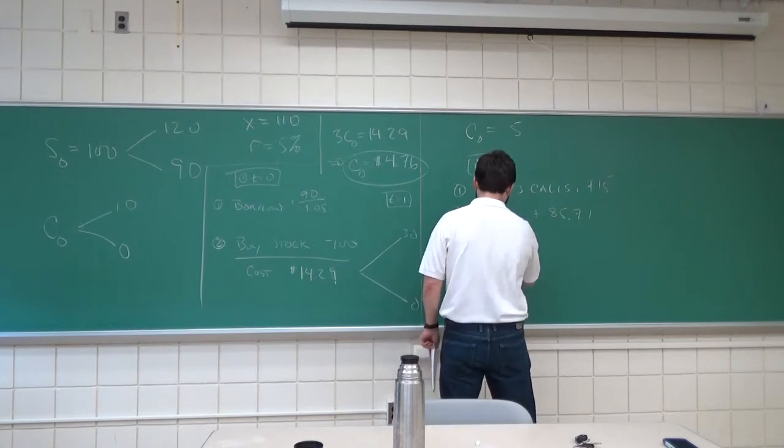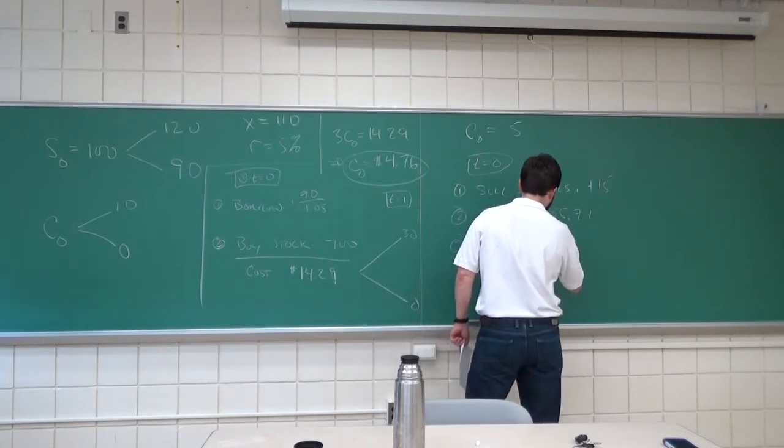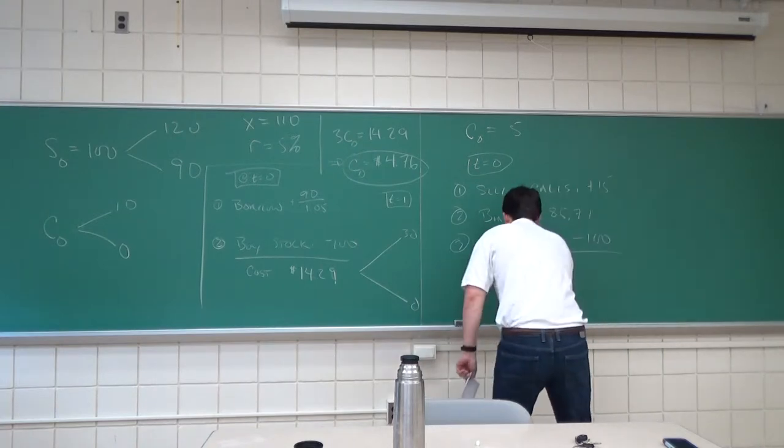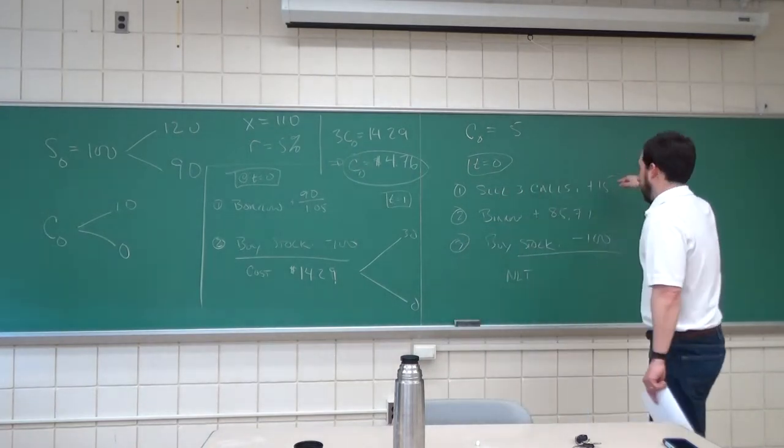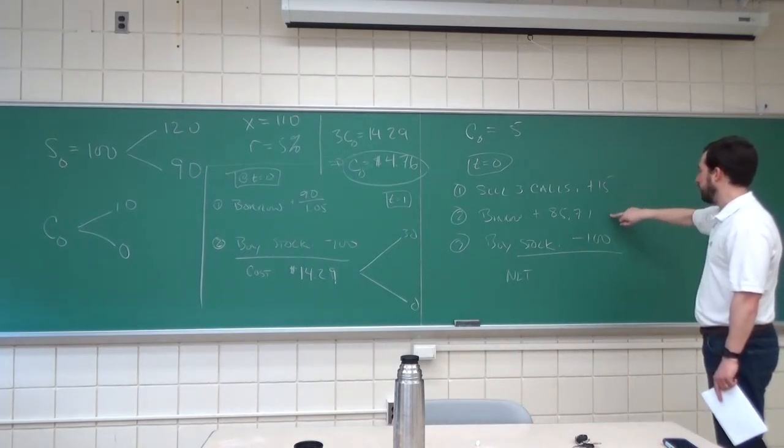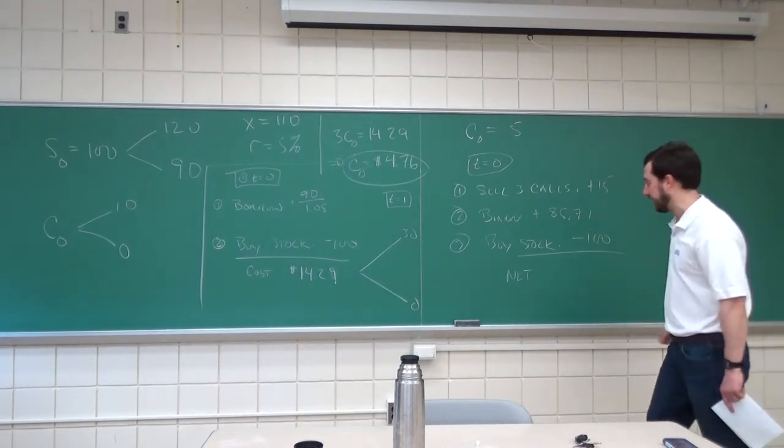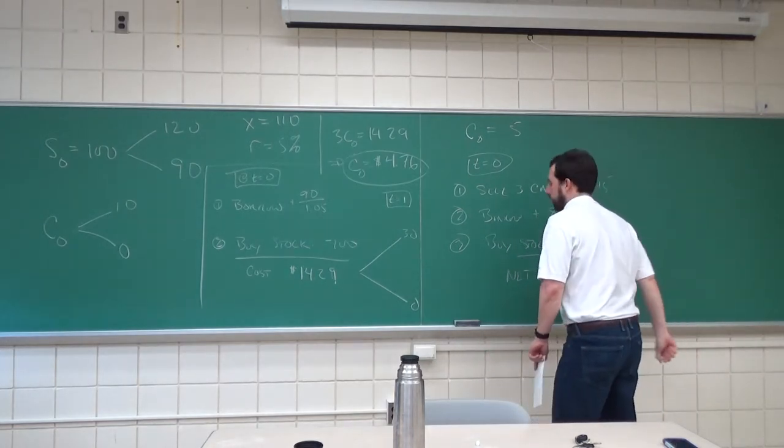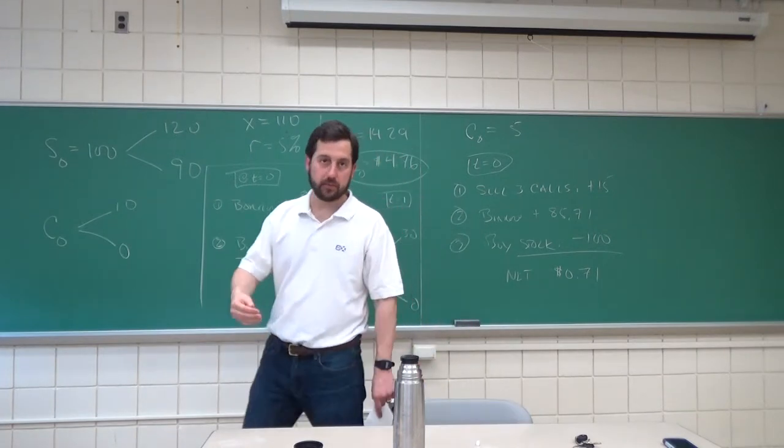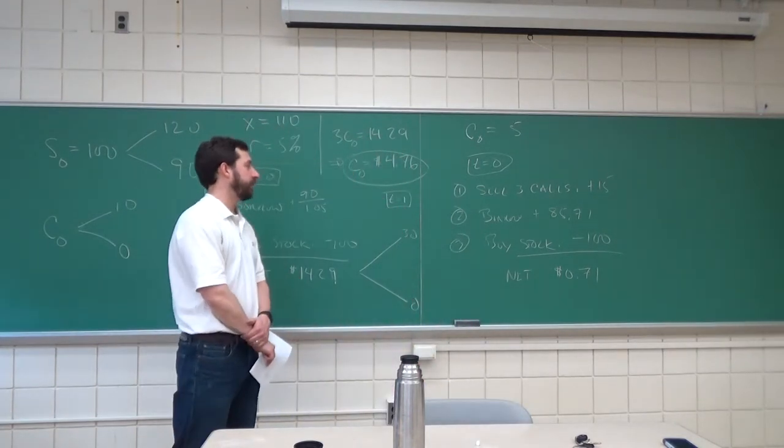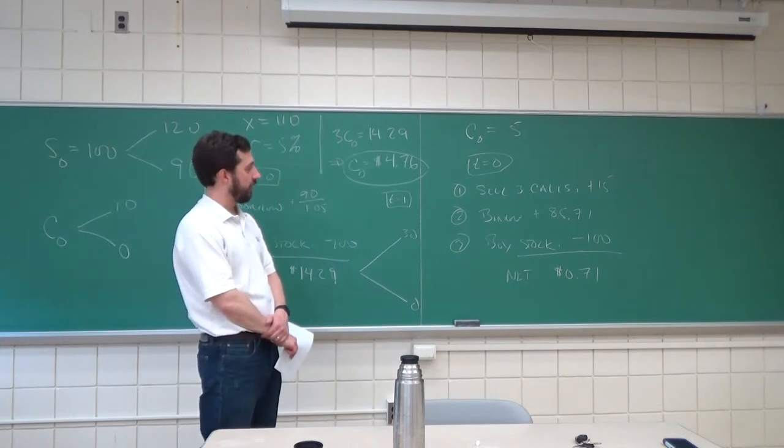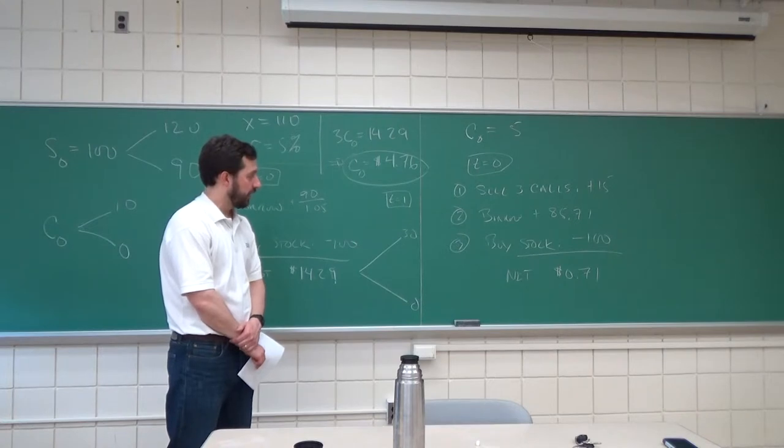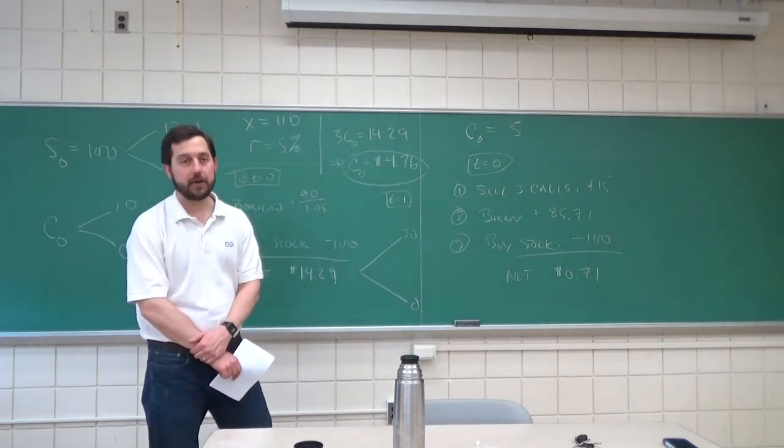Step three, buy stock. This is, of course, minus 100 net. So, our cash flow at time zero, $15, 85, 100, so it's going to be 71 cents, so 0.71. So, if we do this at time zero, sell three calls and replicate those three calls through borrowing $85 and buying stock, we are going to net 71 cents. Now, the question is, what happens at time one?